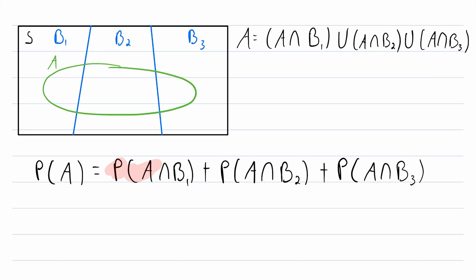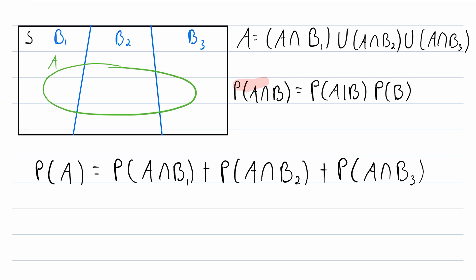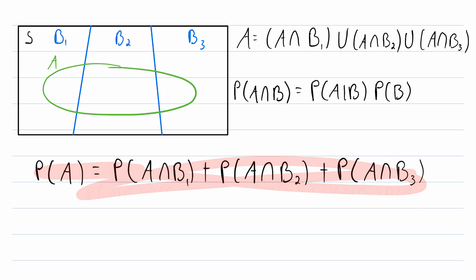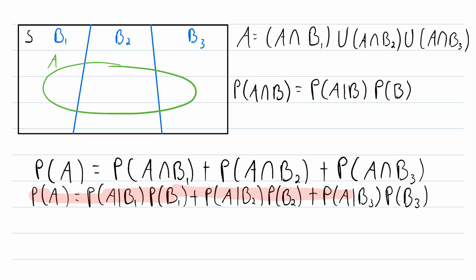A very important thing to point out is that sometimes we really don't know the probability of the intersection of two events. But we can often figure it out using conditional probabilities. So when we actually use the law of total probability, it's very often the case that we'll use this formula: the probability of A intersect B equals the probability of A given B, multiplied by the probability of B.